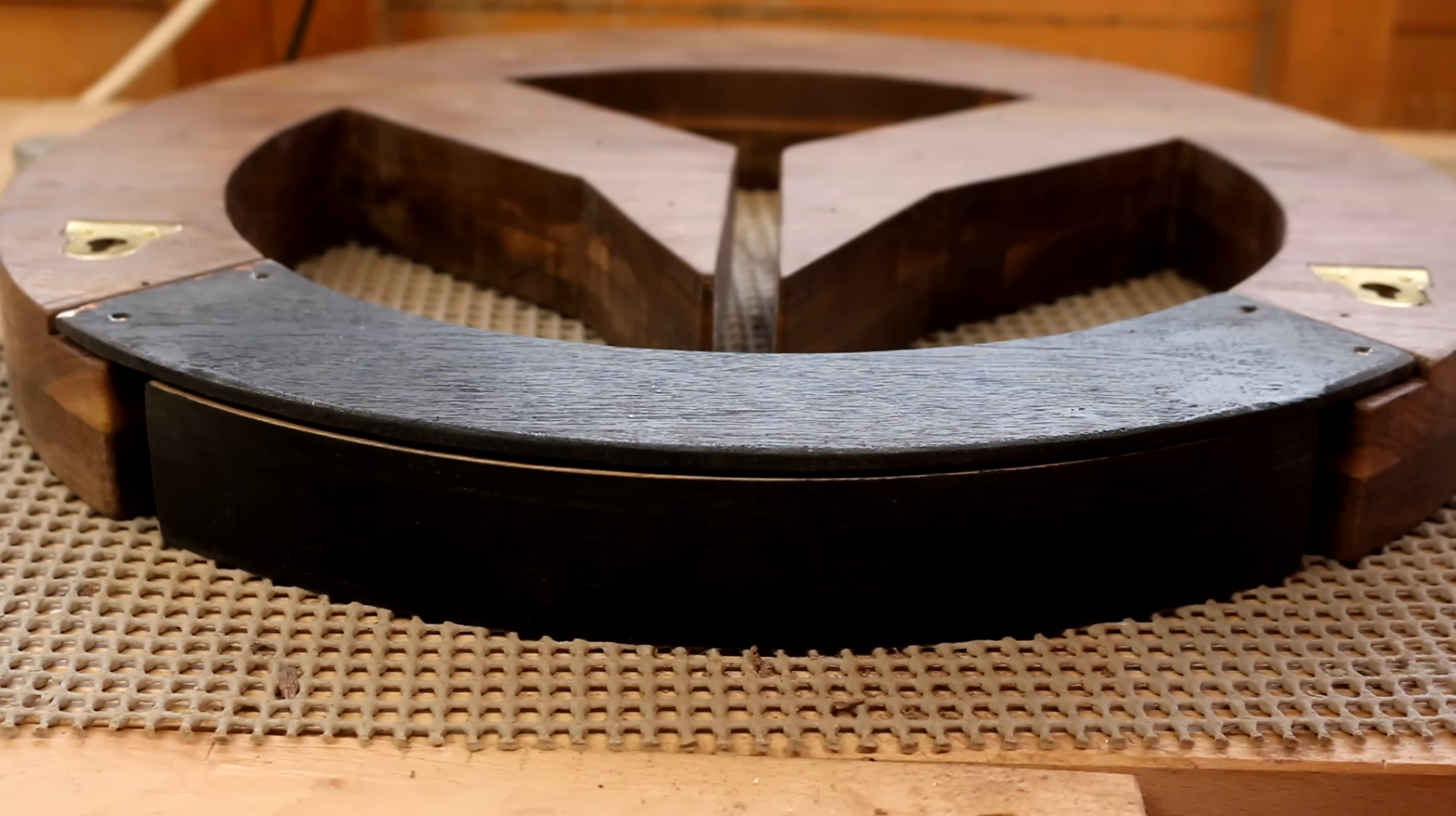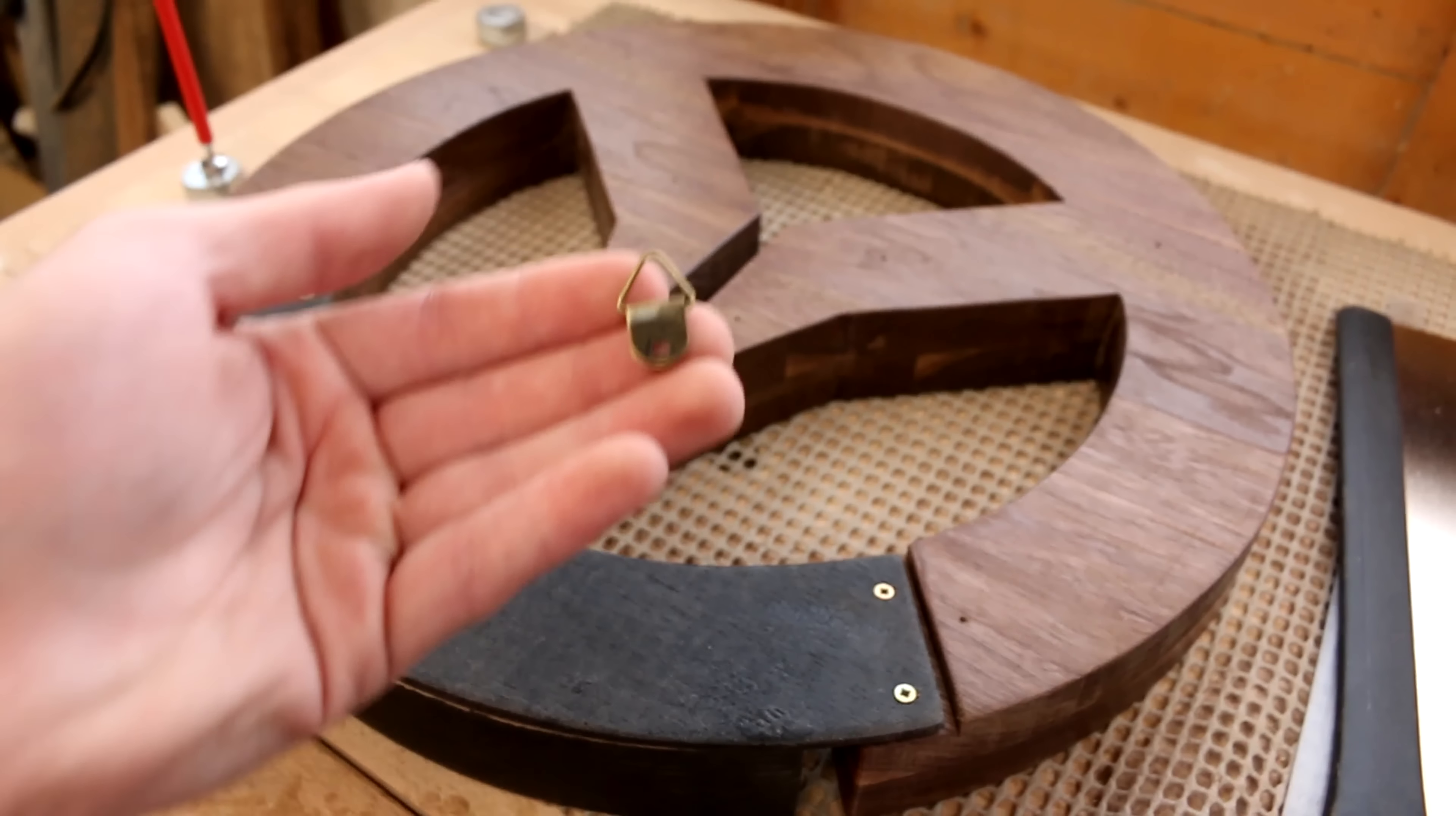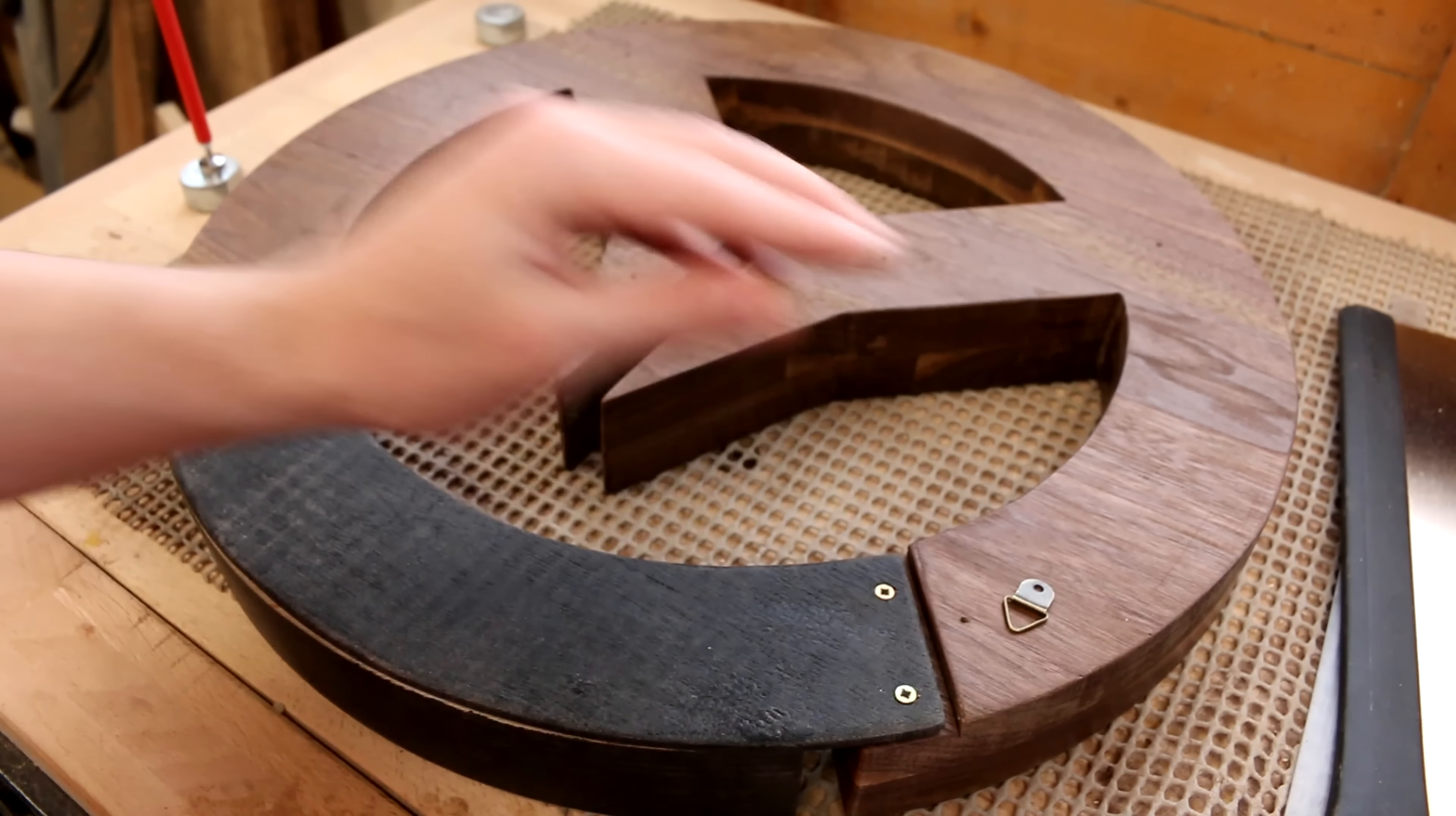The light panel gets secured with four screws into the back of the walnut. Now to hang the light on the wall, my plan was to use some simple picture hangers, but they were nowhere near strong enough.